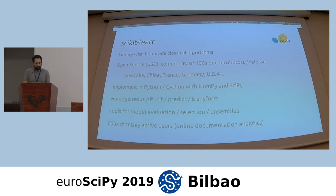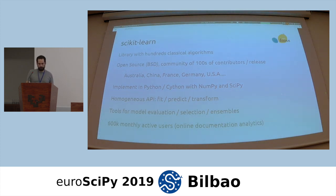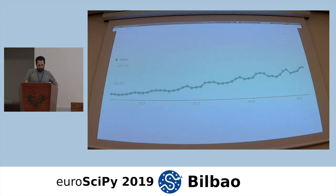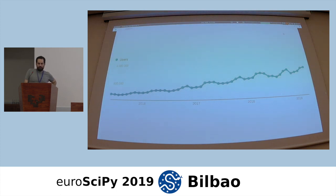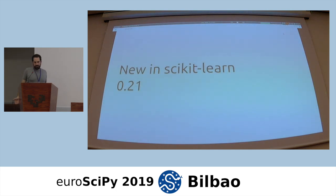We also provide additional tools for model evaluation, like cross-validation, selection of the best hyperparameters, and how to build ensembles of different models to combine their predictive power. There are nowadays around 800,000 unique visitors reading the documentation online, and we are moving slowly toward one million. Basically, the user base is doubling every two years.